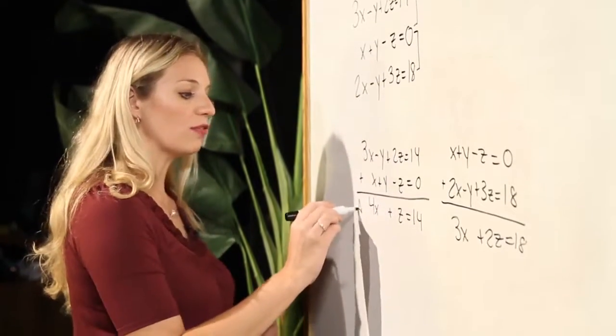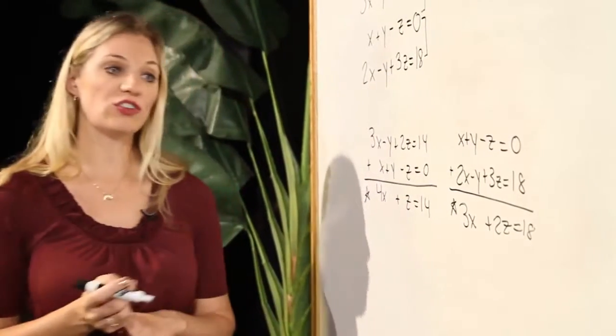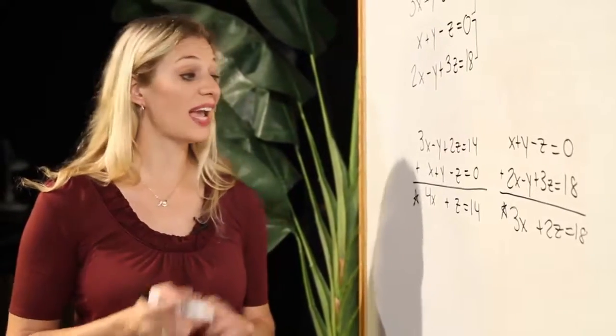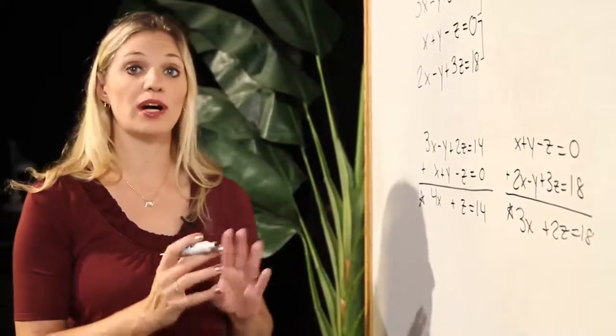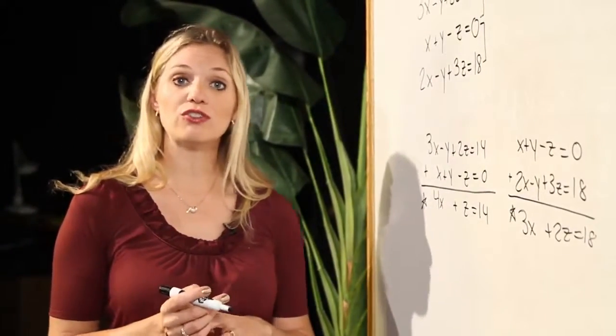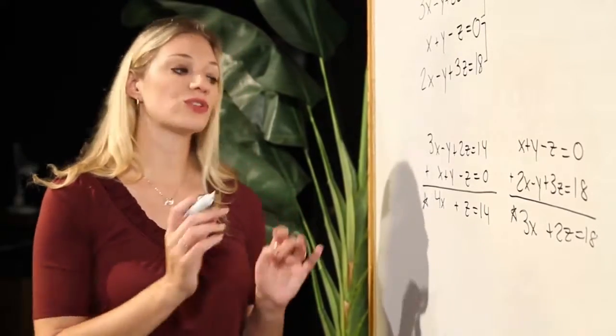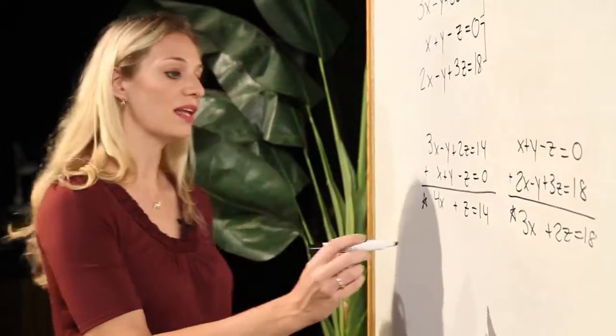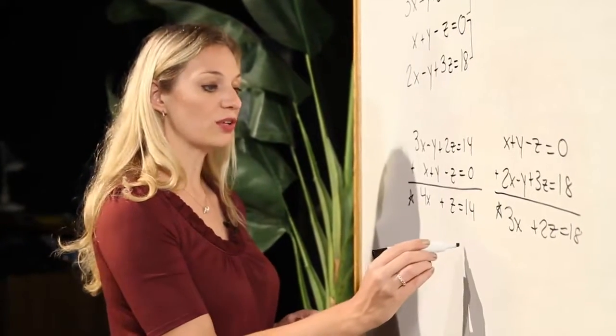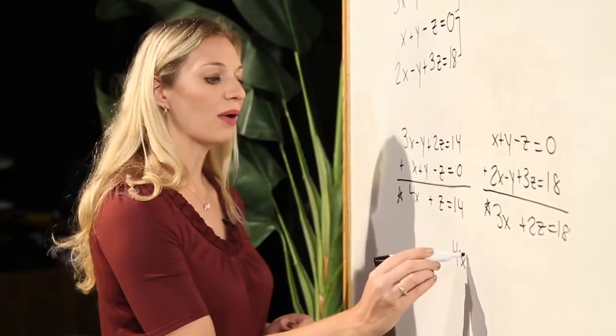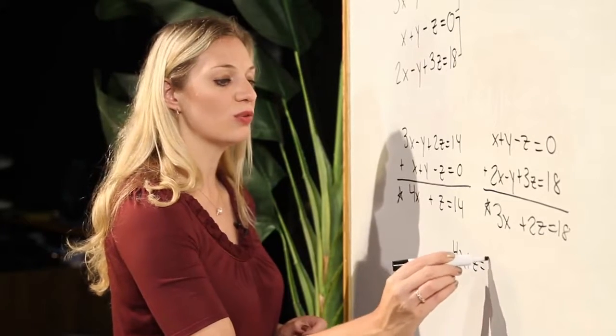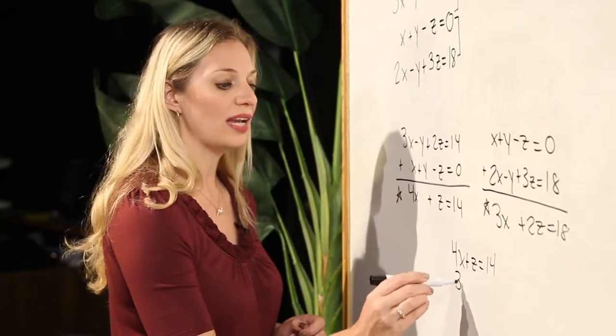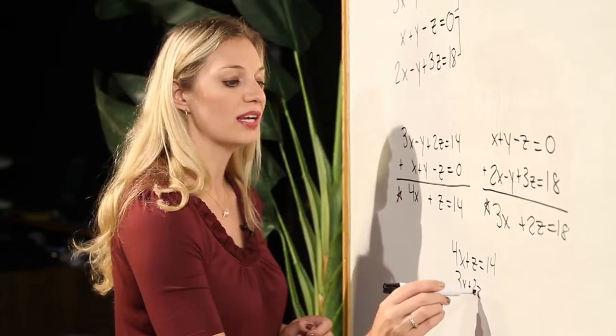What I'm left with now are two equations with two unknowns, and it is the same two unknowns. Both equations are in terms of x and z. It is critical at this step that both equations have the same two variables in them. Let's go ahead now and put these equations together. I will have 4x plus z is 14, and 3x plus 2z is 18.